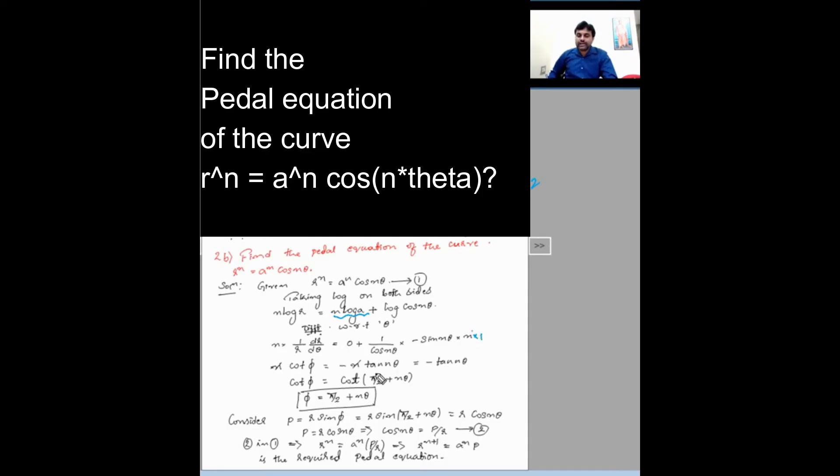So finally n can get cancelled here. Since we have n into this, this can be written as the standard formula: 1/r into dr/dθ is cot phi.